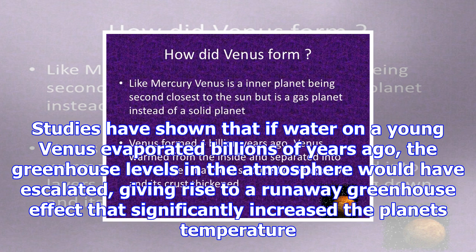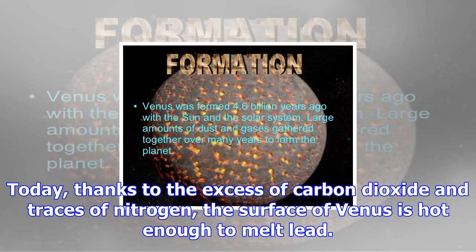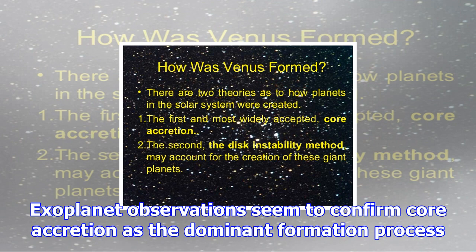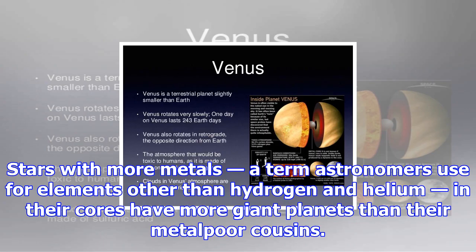Early in its life, Venus may have had an atmosphere much like Earth holds today. Studies have shown that if water on a young Venus evaporated billions of years ago, the greenhouse levels in the atmosphere would have escalated, giving rise to a runaway greenhouse effect that significantly increased the planet's temperature. Today, thanks to the excessive carbon dioxide and traces of nitrogen, the surface of Venus is hot enough to melt lead.